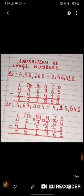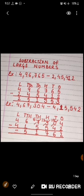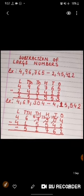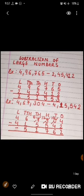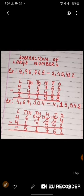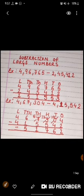And by the way, this is without regrouping. Now, second example. Second example is 4,67,304 minus 4,15,542. So here again, the first step will be to arrange the numbers as per the place value chart. We have done that. Second, in each column, starting from the ones place, we will start subtracting.